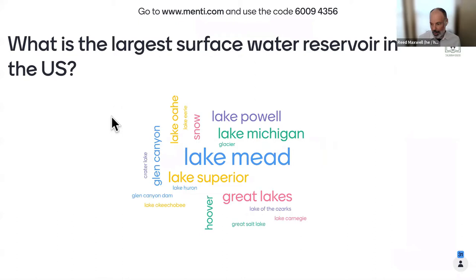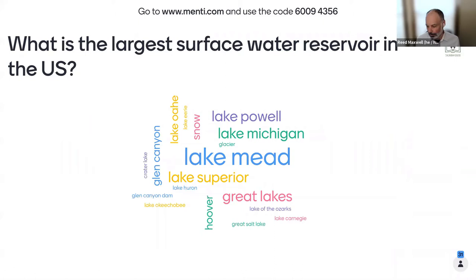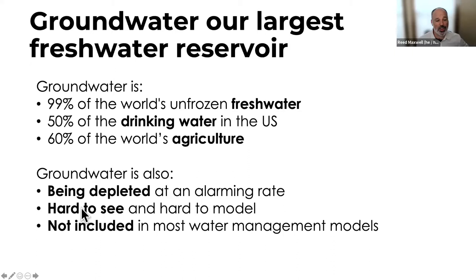The audience is zooming in quickly. We've got responses: snow, Rocky Mountains, Sierra Nevada — all super important. But the largest freshwater reservoir in the U.S. is, in fact, groundwater. Groundwater is our largest freshwater reservoir. It's 99% of our world's unfrozen freshwater — the largest accessible freshwater source in the world. It's half of our drinking water in the U.S. and 60% of the world's agriculture. Groundwater is being depleted at an alarming rate, and it's really out of sight, out of mind.